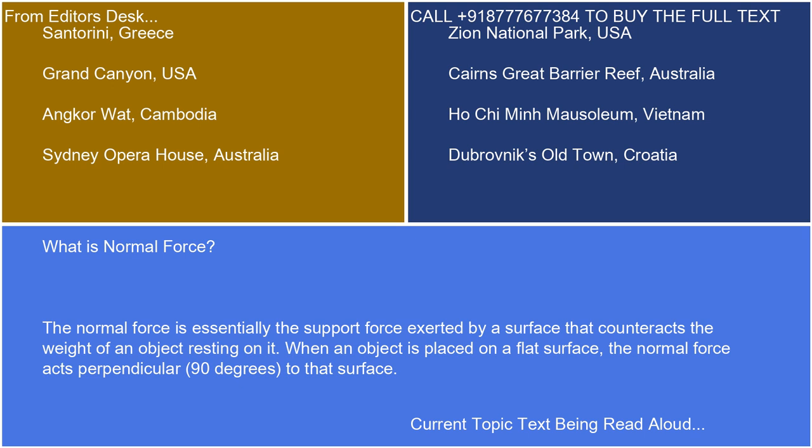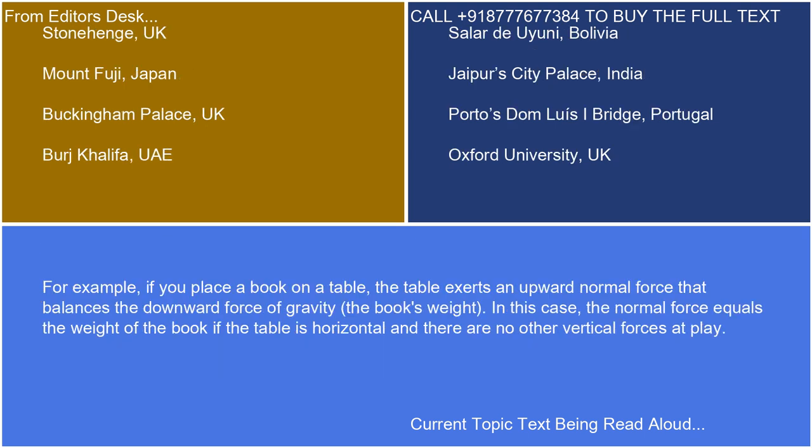When an object is placed on a flat surface, the normal force acts perpendicular — 90 degrees — to that surface. For example, if you place a book on a table, the table exerts an upward normal force that balances the downward force of gravity, the book's weight. In this case, the normal force equals the weight of the book if the table is horizontal and there are no other vertical forces at play.